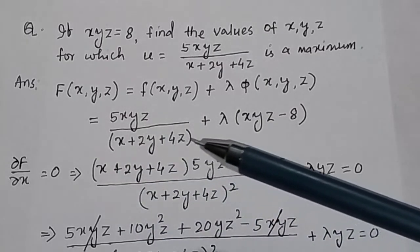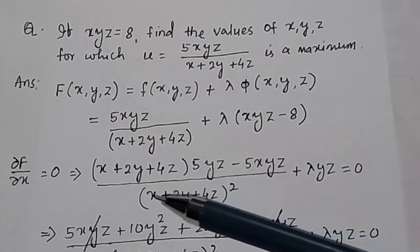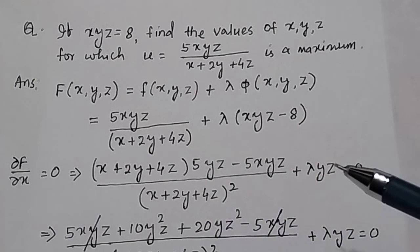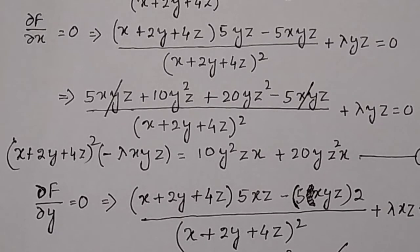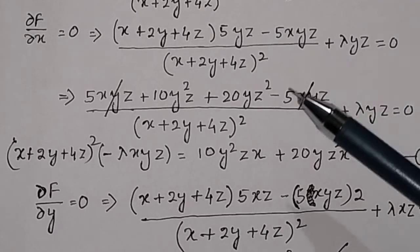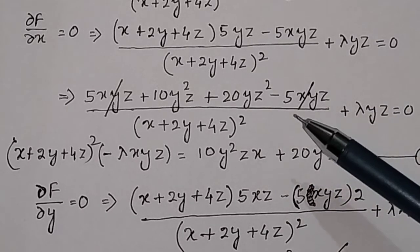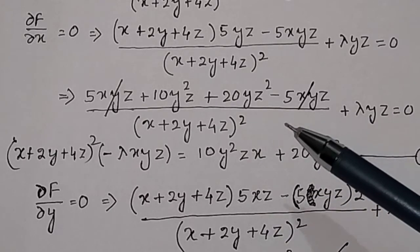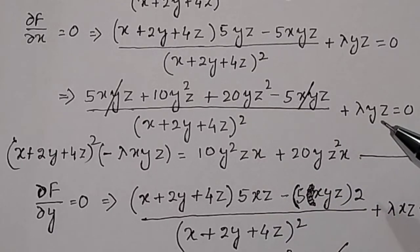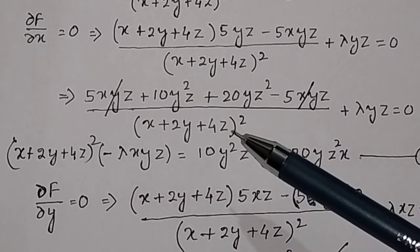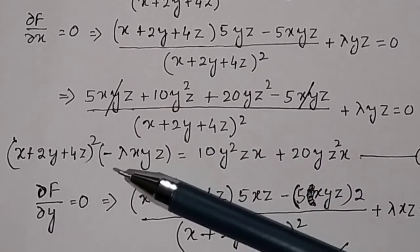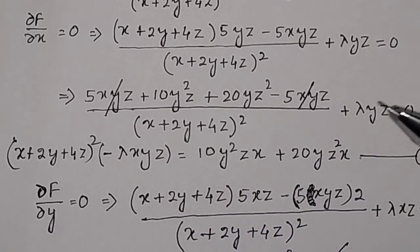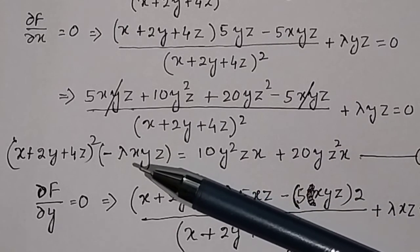Taking the partial derivative with respect to x and setting it equal to 0, we get the derivative of each term. Solving this equation, we take lambda times yz to the right-hand side and multiply by (x plus 2y plus 4z) squared. Multiplying through and rearranging gives the left-hand side expression.